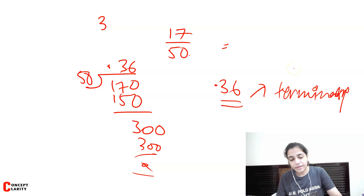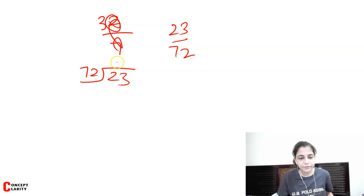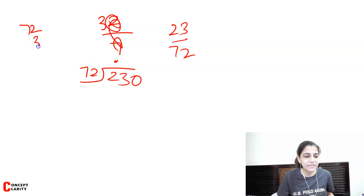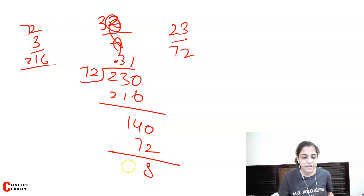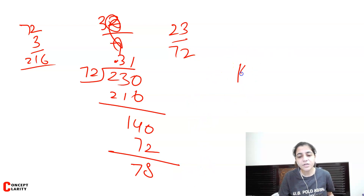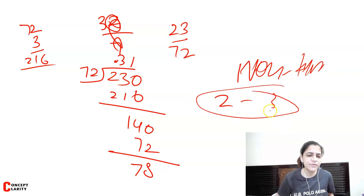Similarly, take 23 by 72. When you divide 23 by 72, we take a decimal point and divide. The result comes out as 0.3194... and it keeps going — 78, 78, 78... repeating. So it is a non-terminating number. Try dividing to 2 or 3 decimal places and it is pretty obvious it is non-terminating.